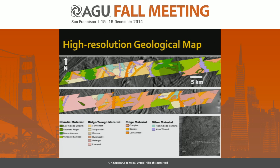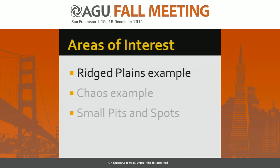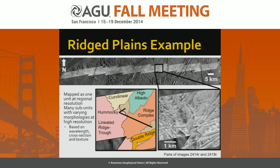Starting with the ridge plains example — in the regional resolution it was mapped as one unit, but in the high resolution we're seeing many subunits with varying morphologies. You can see the lineated ridge trough terrain, which is very sharp and narrow, compared to the curvilinear terrain with a more defined ridge trough and more triangular cross-section. We can also compare this to the hummocky region, which has a completely different texture. The high resolution is showing different variations of these ridge plains, implying different formational processes. These classifications were based on wavelength, cross-section, and texture.